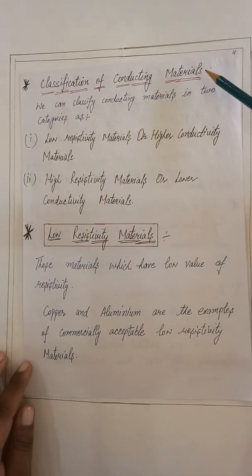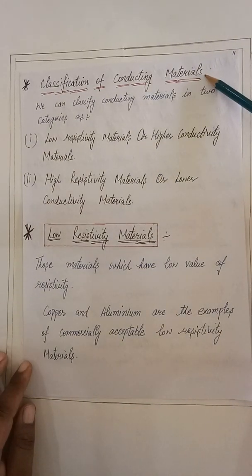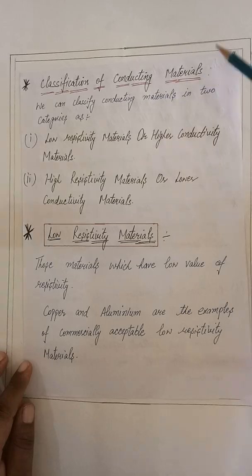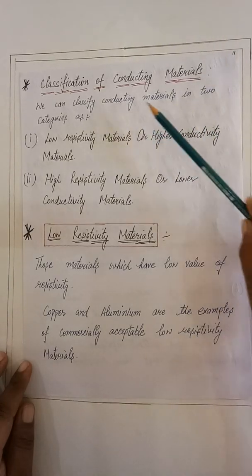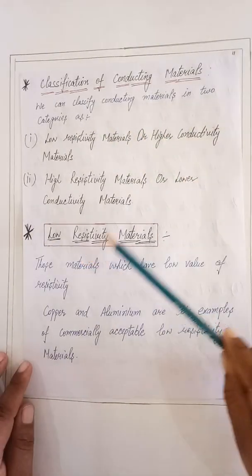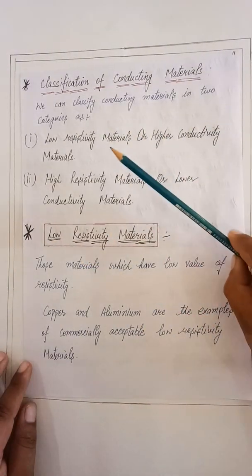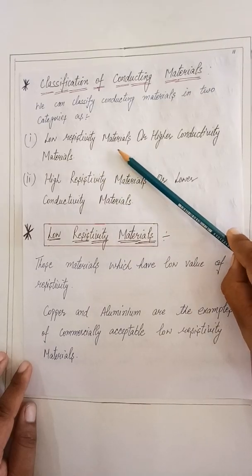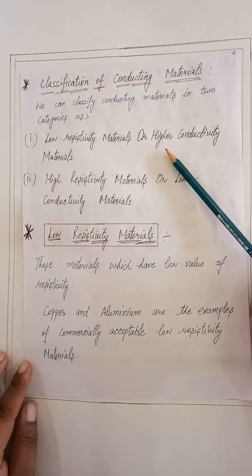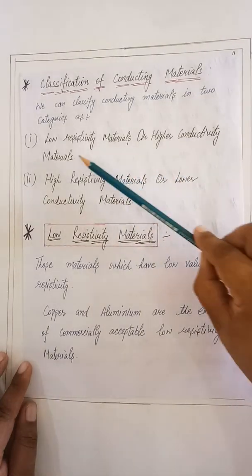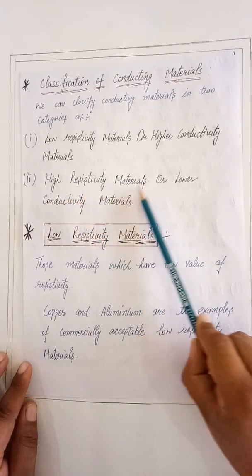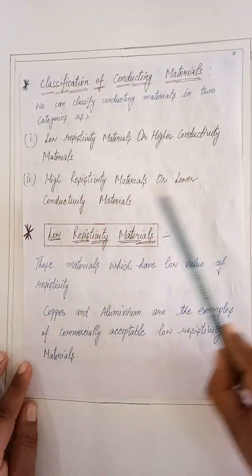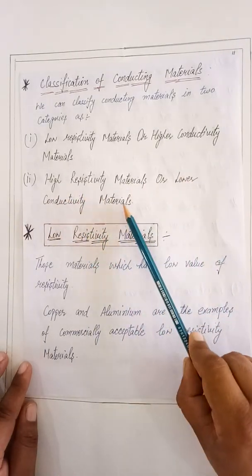Our next topic is the classification of conducting materials. We can classify conducting materials into two categories: first, lower resistivity materials or higher conductivity materials, and second, high resistivity materials or lower conducting materials.